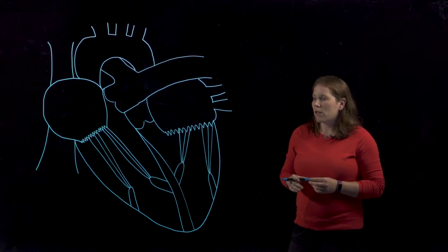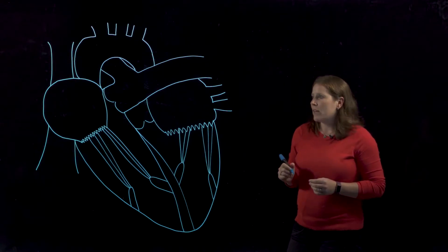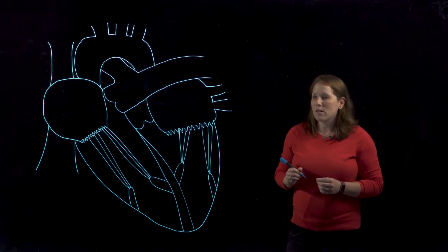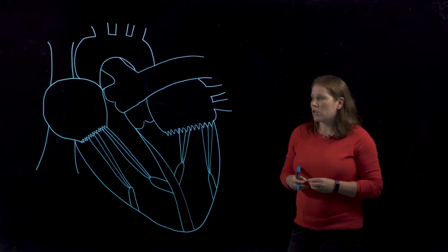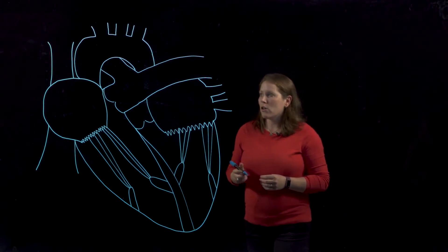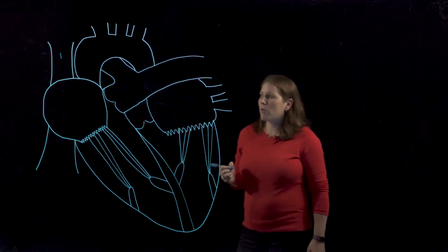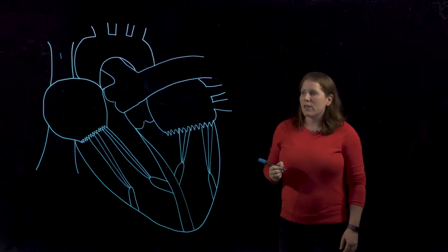We're going to start by looking at blood that's draining from the head and neck area as well as the upper limbs. All of this deoxygenated blood is going to return to the heart through this structure which I'll label number one and this is the superior vena cava.